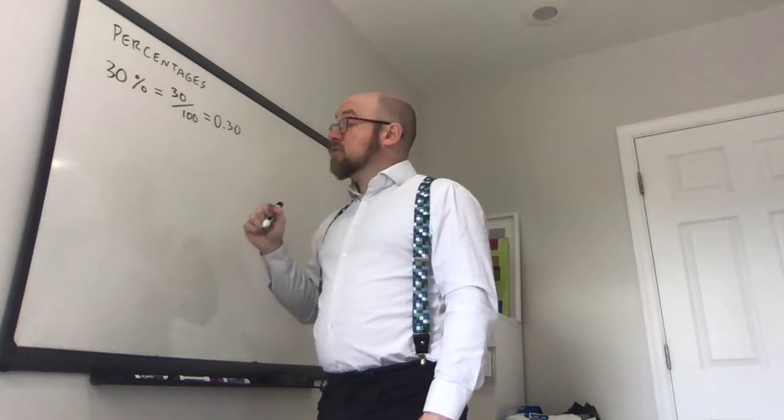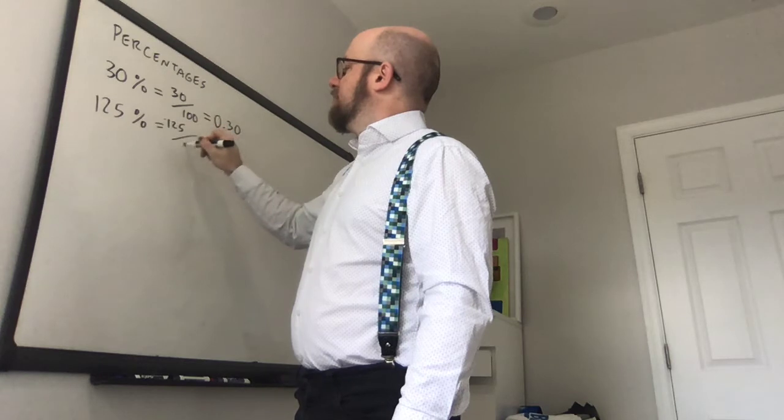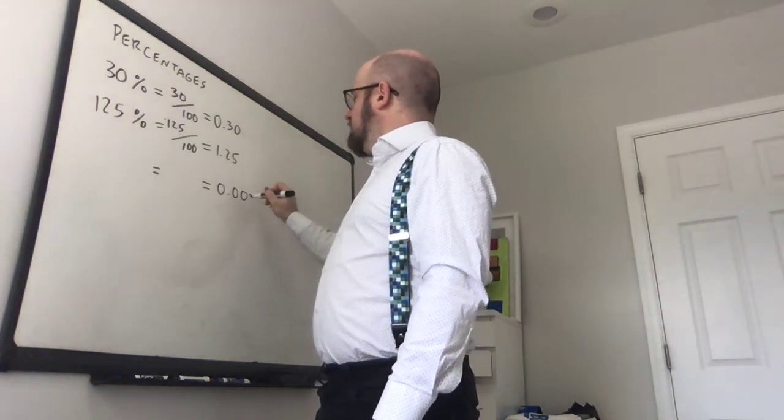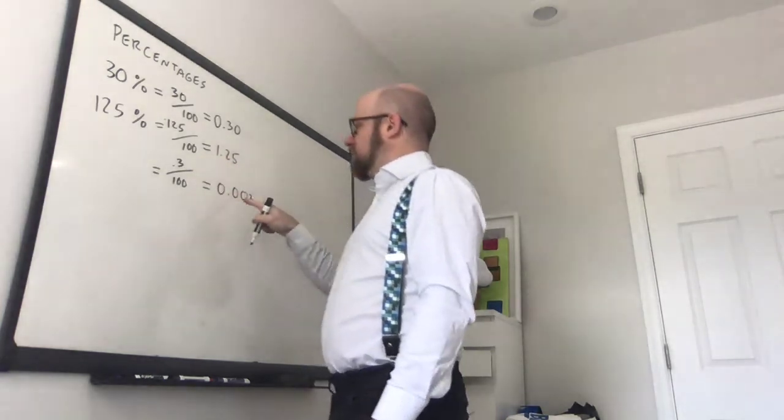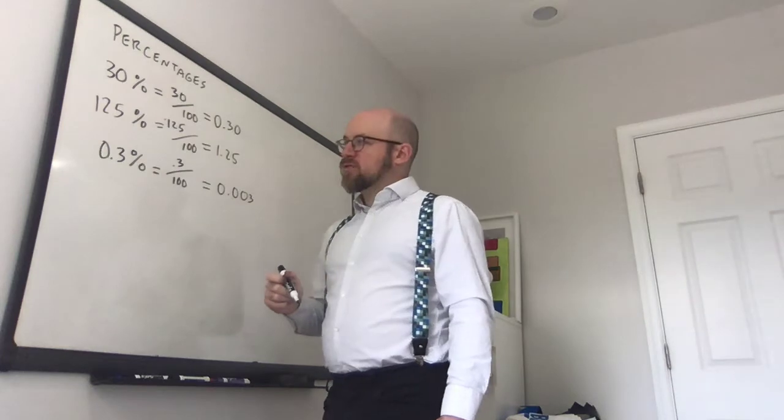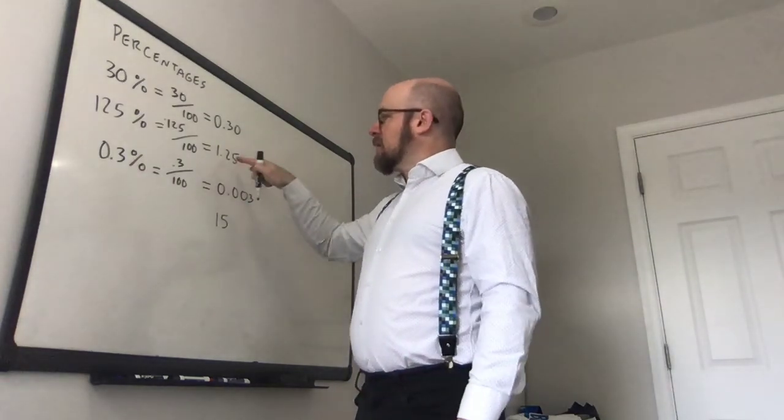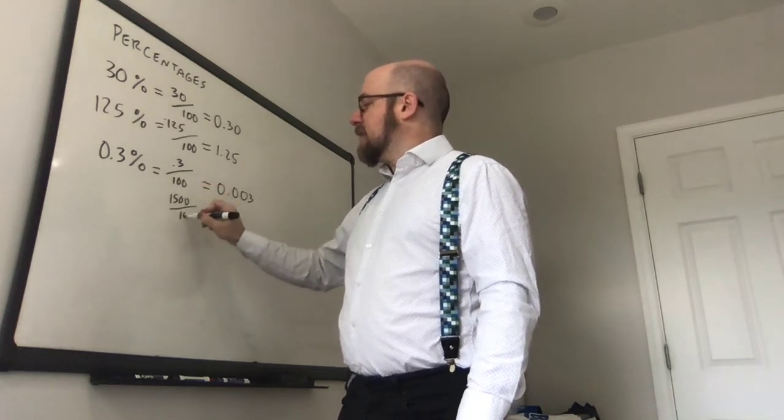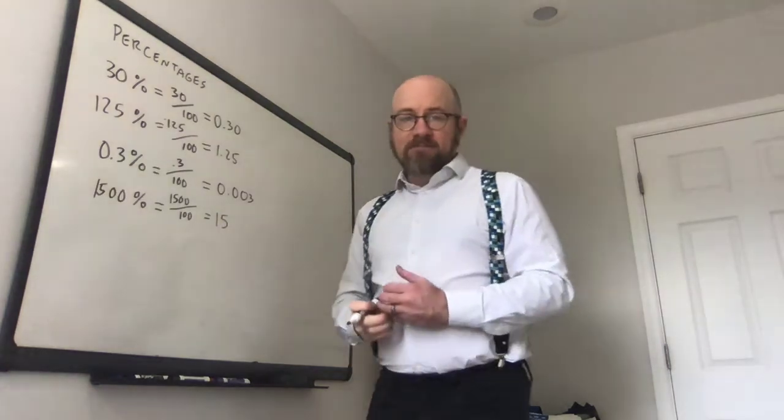So any number can be made into a percentage. If somebody gives you, say, 125 percent, that's 125 out of 100, or 1.25. If you have something like 0.003, that's 0.3 out of 100. So 0.3 divided by 100 gives you 0.003, which is 0.3 percent. If you had a number like 15, it's just going to give you a percentage that's greater than 100 percent. Something like 15 would be 1,500 divided by 100. So this is 1,500 percent.